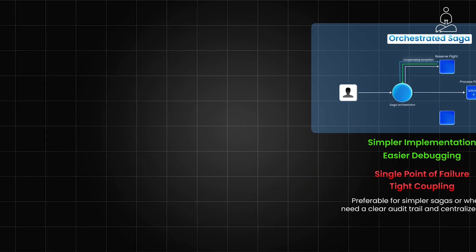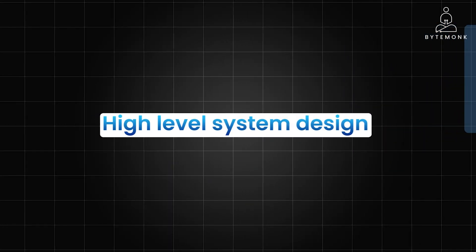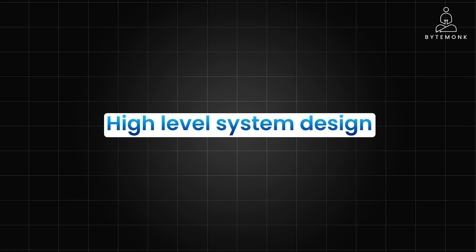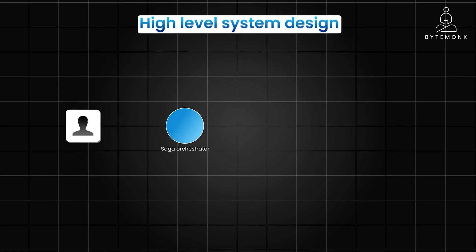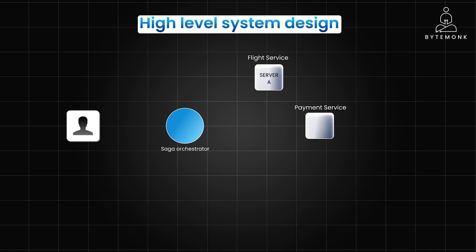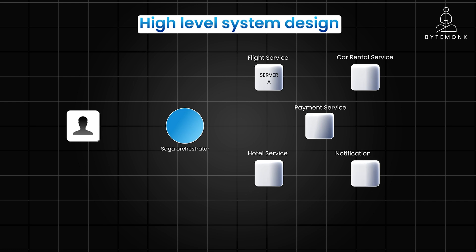Let's take a look at a high-level system design of an orchestrated saga for flight booking. Our main components are: a saga orchestrator, which is the central coordinator that manages the workflow; a flight service that handles flight reservations; a payment service which manages payment processing; a hotel service to book hotel rooms; a car rental service to reserve car rentals; and finally, a notification service to send confirmation emails.